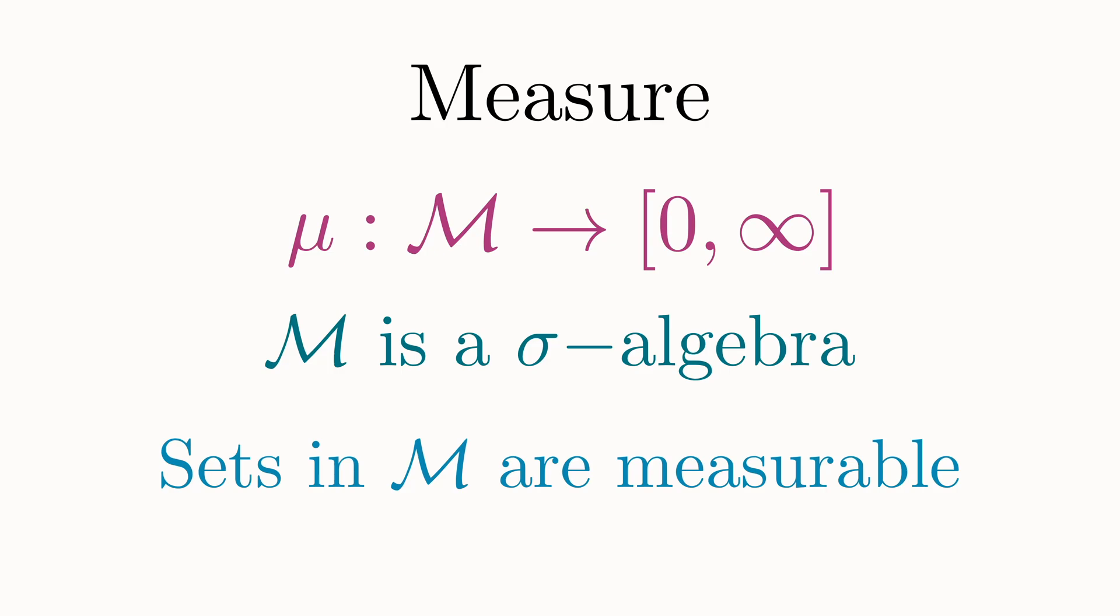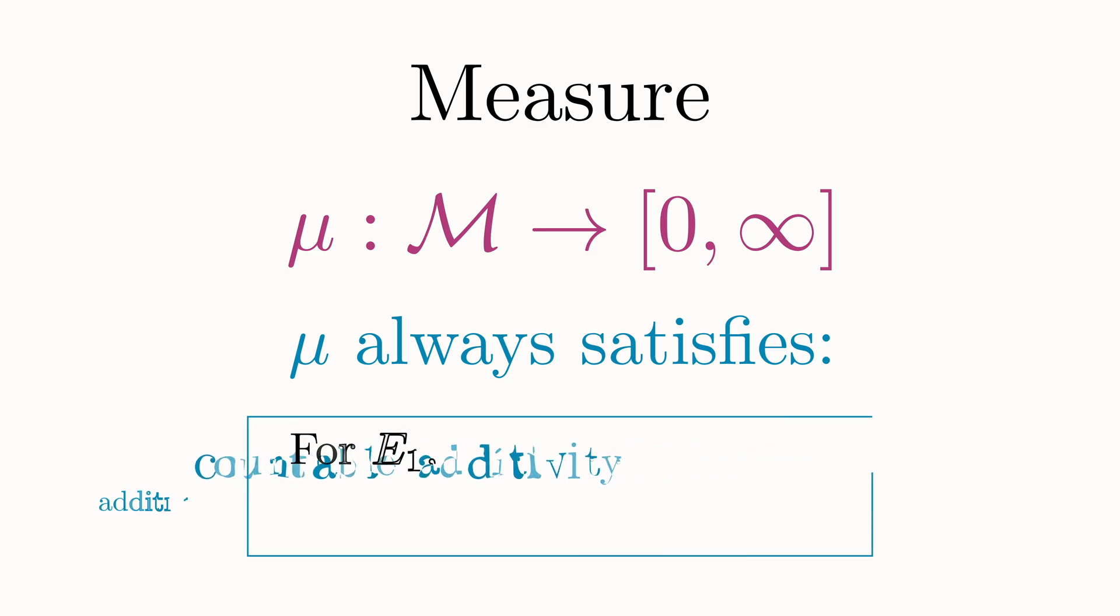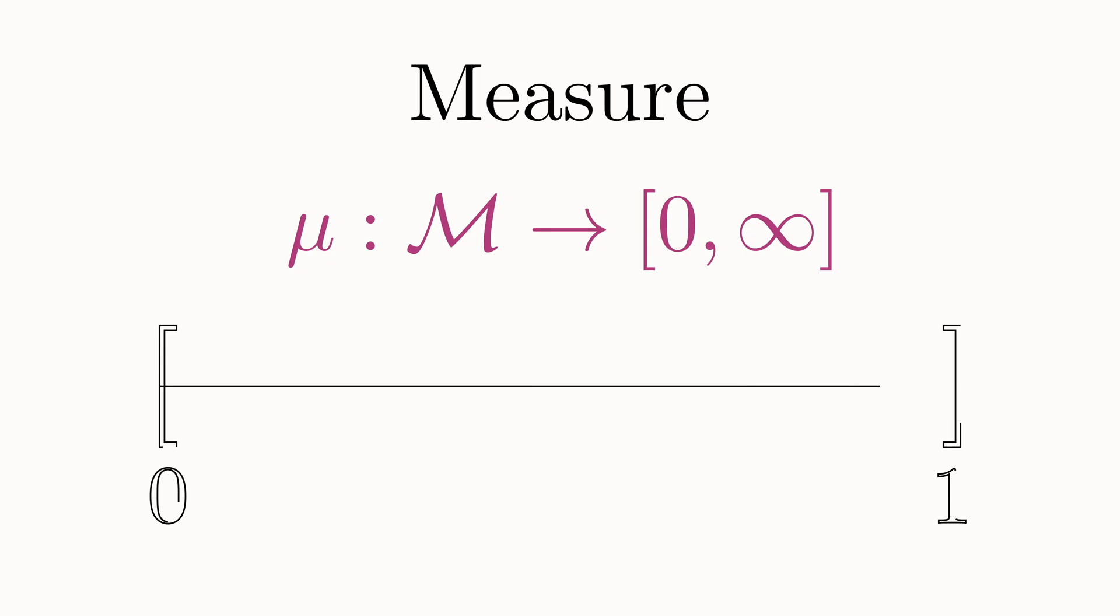But for this video, all you need to know is that a measure is some function that does this assignment. And it will always do it in such a way that it satisfies a property called countable additivity, which means that the measure of a union of countable sets will always equal the sum of the measure of each of the smaller sets. In our context, a measure will assign a non-negative real number to subsets of the unit interval.